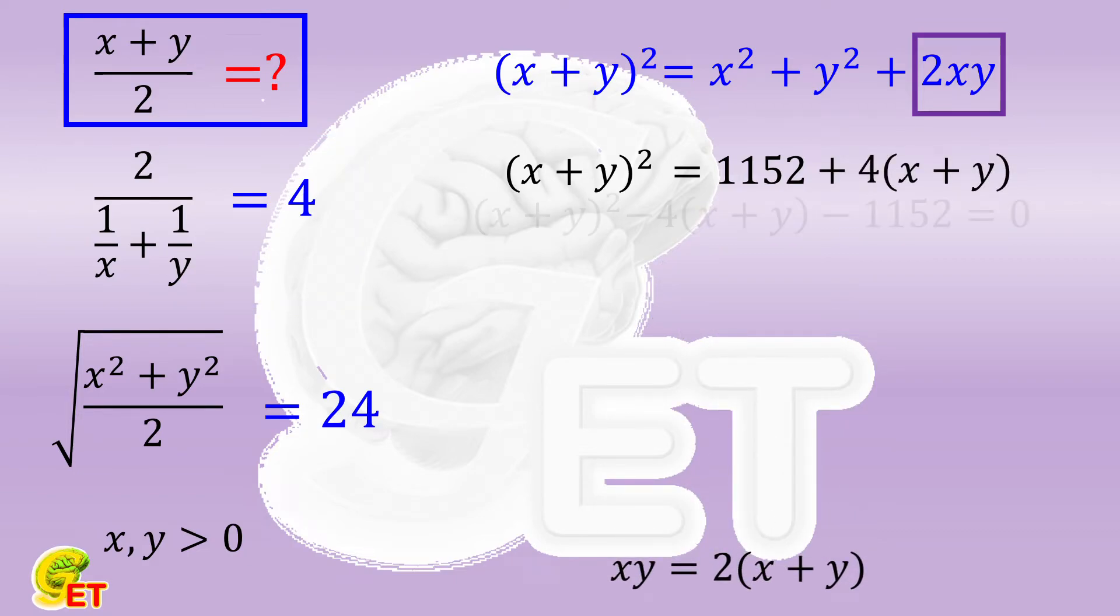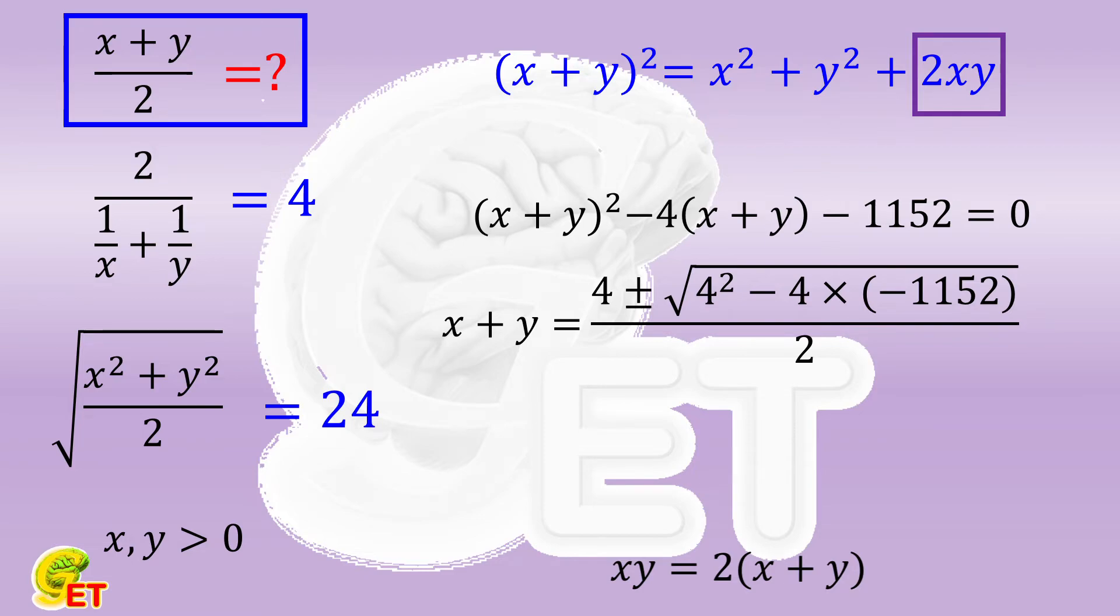So we get a standard quadratic equation of one unknown. It is easy to find its roots by using the formula, which is equal to half of 4 plus or minus 68. Since both x and y are positive, their summation is also positive.